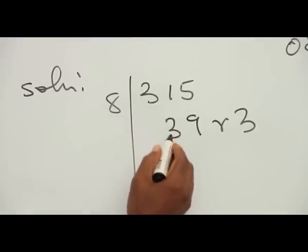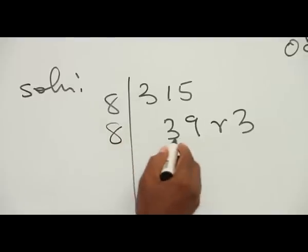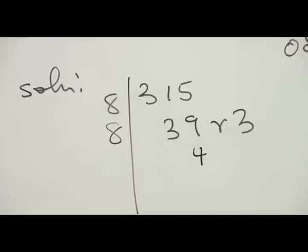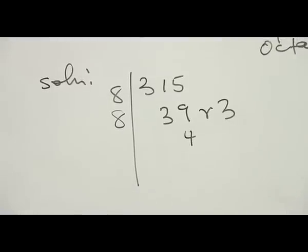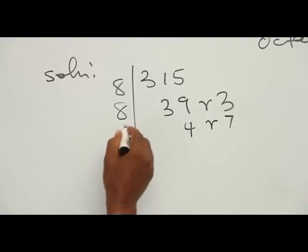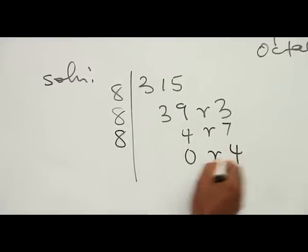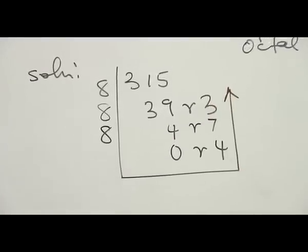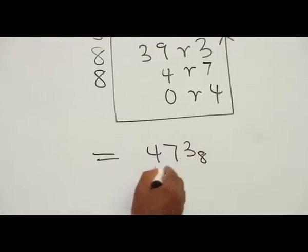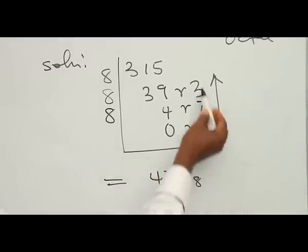8 into 31 is 3 remainder 7; 8 into 75 is 9 with remainder 3; 8 into 39 is 4 with remainder 7. Then 8 cannot divide 4, so you bring down the 4, rule across and take it up. Your final answer is equal to 473 in base 8. This is now clearer — you must start your answer from the bottom to the top.